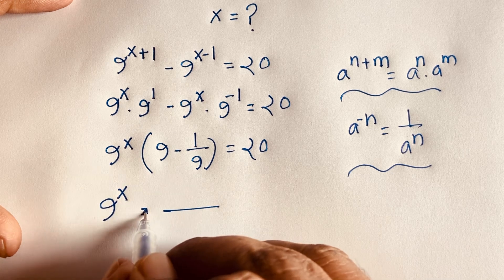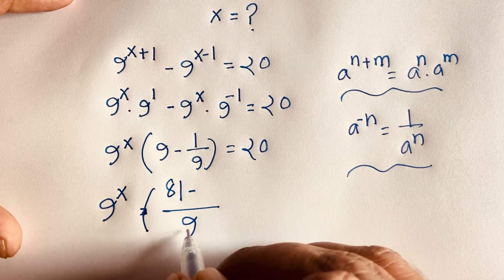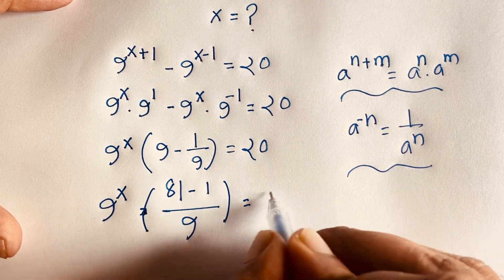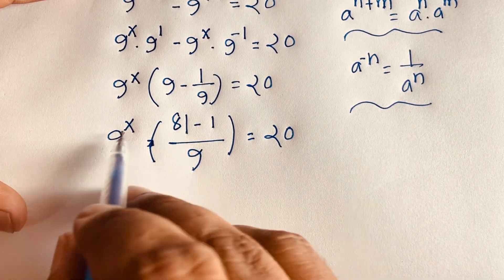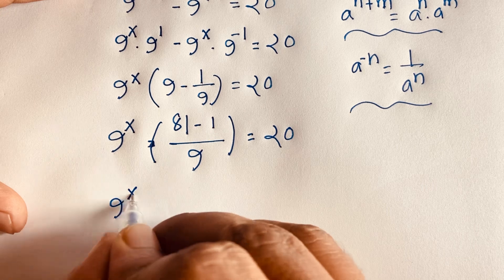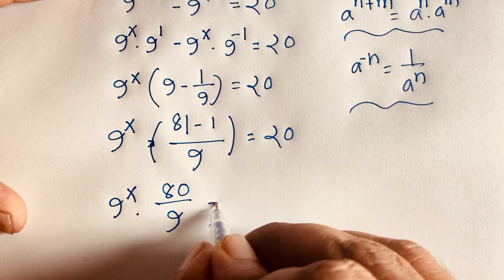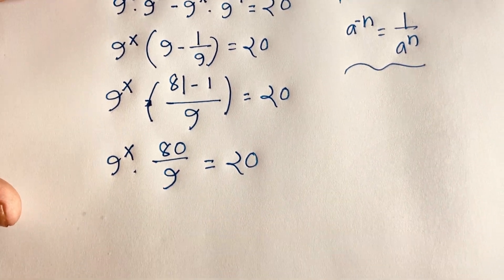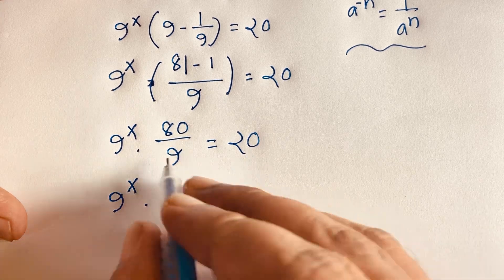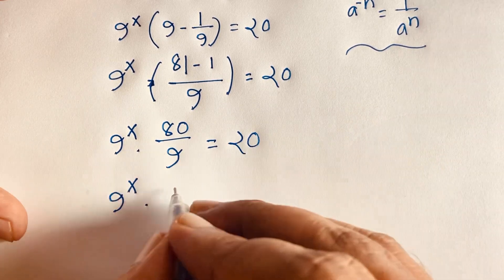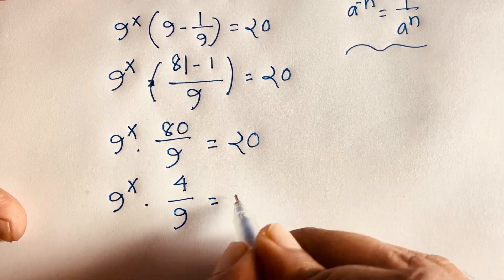Now the least common value is 9, so 9 times 9 is 81, and 81 minus 1 is 80. So we get 9^x times 80 over 9 equals 20. Dividing both sides by 80 over 9, or equivalently: 9^x times 80 divided by 9 equals 20, which simplifies to 9^x times 80 equals 20 times 9, giving 9^x equal to 9 over 4.